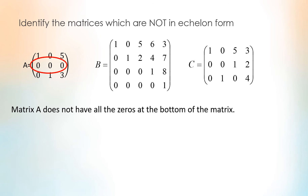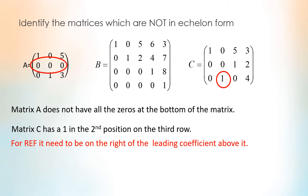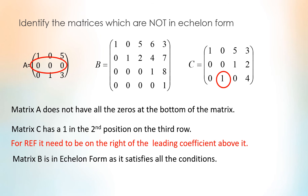Observe matrix C. It has a 1 in the second position on the third row. For row echelon form, it needs to be on the right of the leading coefficient above it. Hence, matrix C is also not in echelon form. Now observe matrix B — matrix B is in echelon form as it satisfies all the conditions.